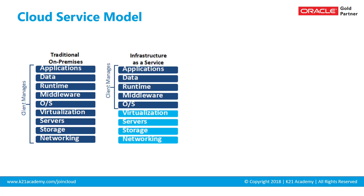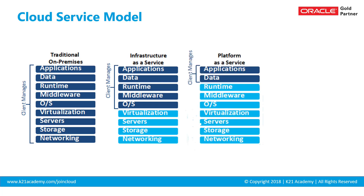In Infrastructure as a Service, the networking layer, storage layer, servers layer, and virtualization layer are provided by the cloud vendor. Everything above that — like the operating system (Windows, Linux, Solaris), middleware such as WebLogic, application servers, web servers, and databases — is managed by the client. So up to virtualization is the cloud vendor's responsibility; after that, it's the client's. Vendors like Amazon, Oracle, Microsoft Azure, IBM, and Google Cloud are IaaS providers.